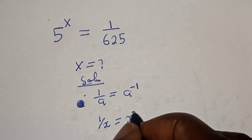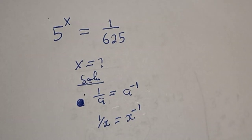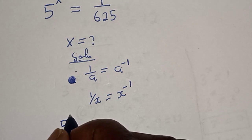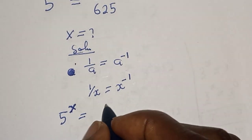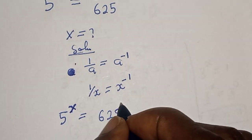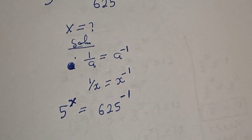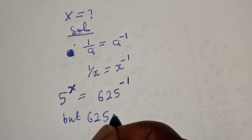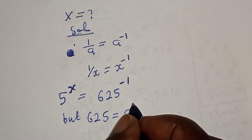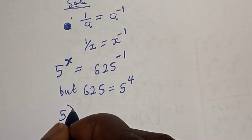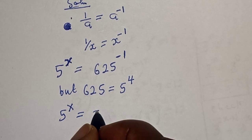Then this completes as 5 raised to power x is equal to 625 raised to power minus 1. But 625 is equal to 5 raised to power 4.